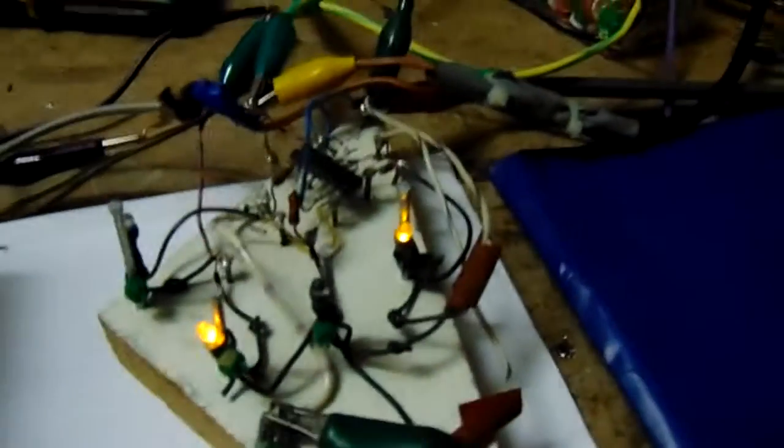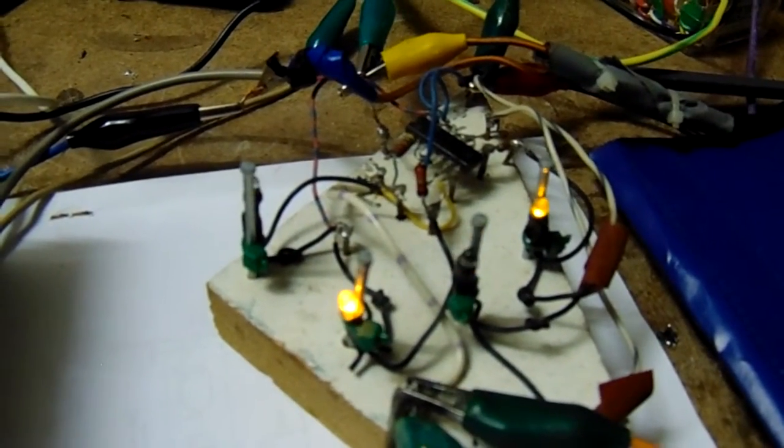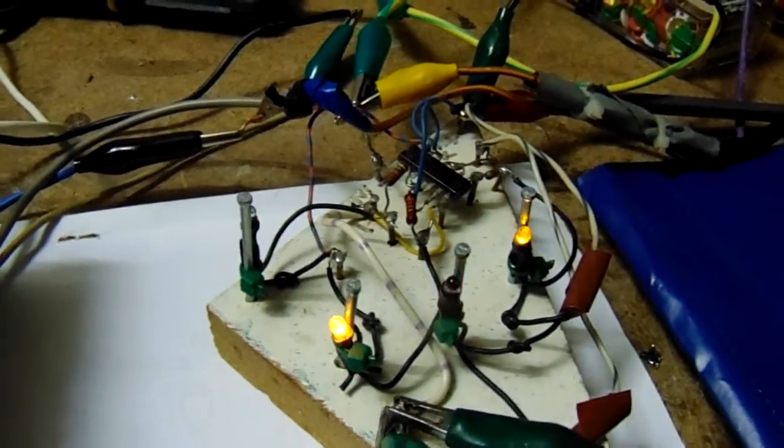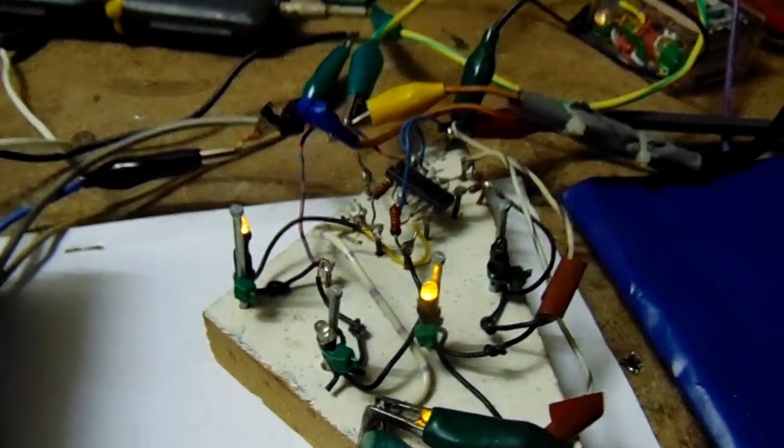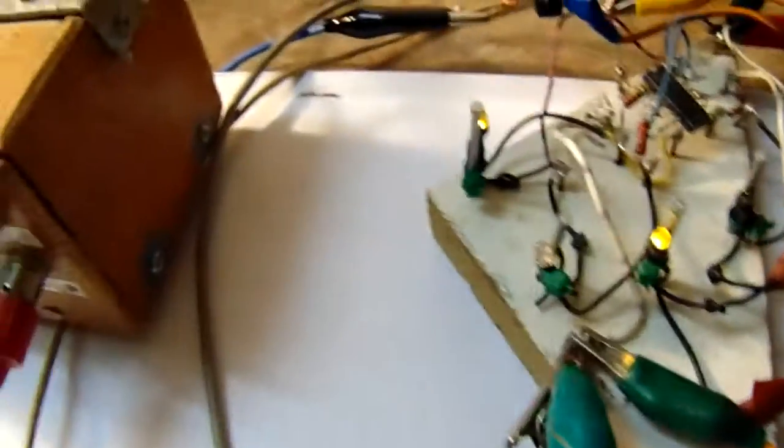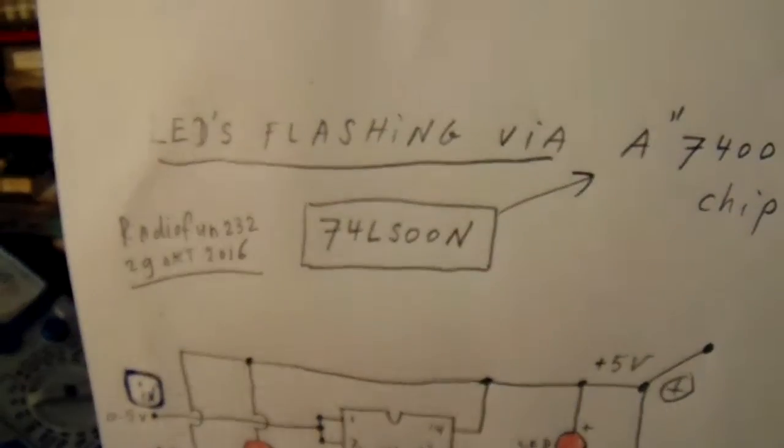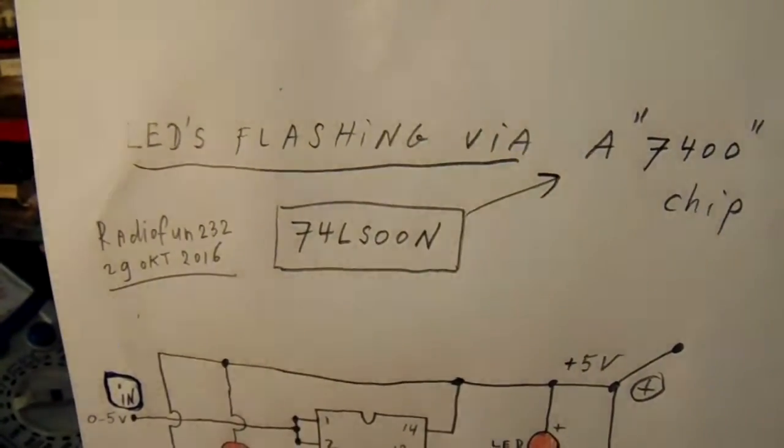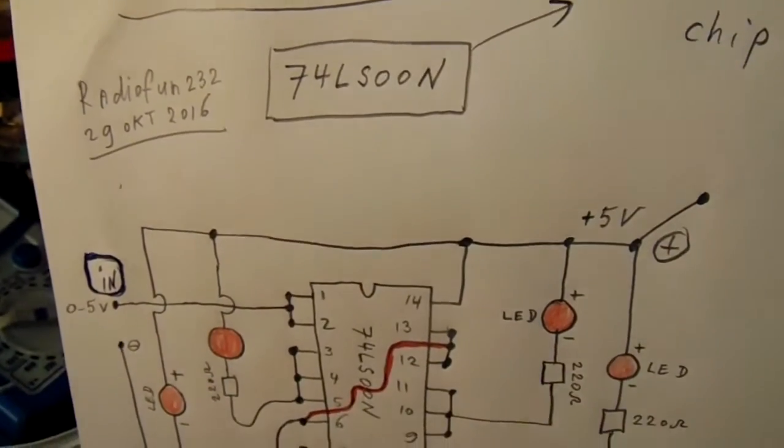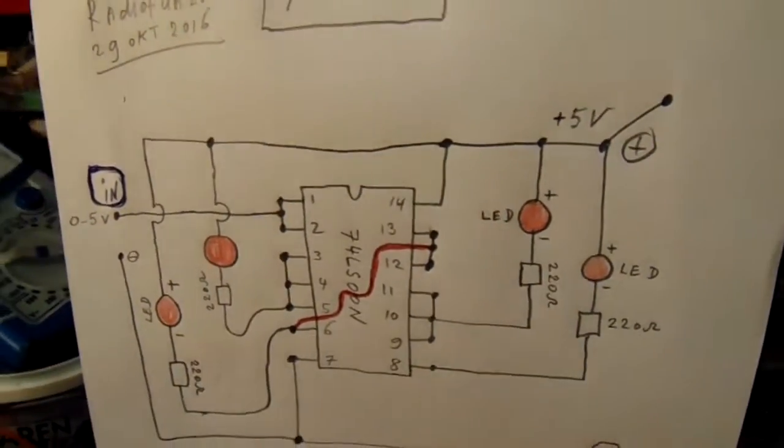This is the circuit. These LEDs are flickering in a certain pattern, and that's done by using this chip, the 7400 Schottky 00N chip. This is the circuit, by the way. Very simple.